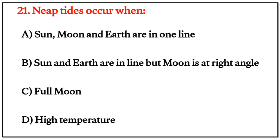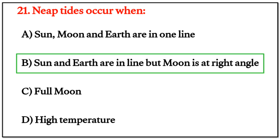MCQ Question 21: Neap tide occurs when — the right answer is B: the sun and the earth are in line but the moon is at a right angle.